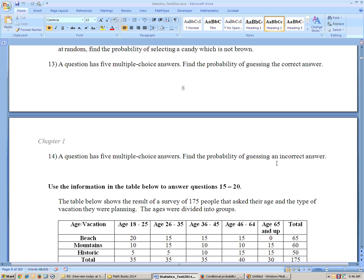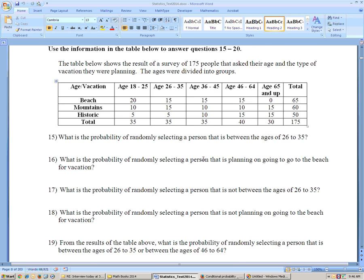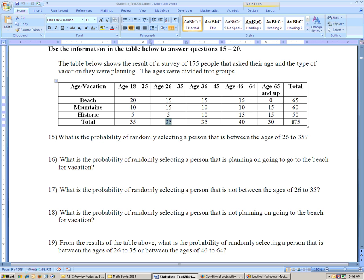What's the probability that you guessed it incorrect here on 14? Well, it would be 4 out of 5. On 15, it's using this table, probability that somebody's between the ages of 26 to 35. Well, here's the total, 35 out of 175.